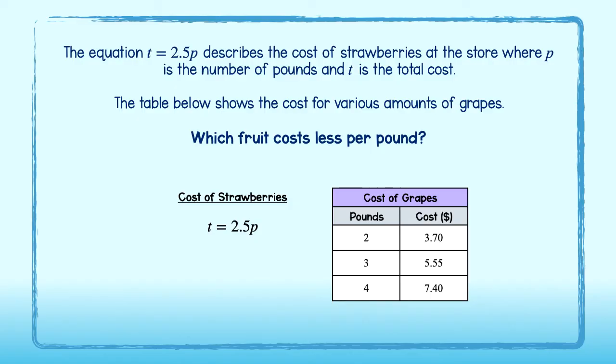Looking at this equation, we see the constant rate of change is 2.5. This tells us that the unit rate is $2.50 per pound of strawberries.